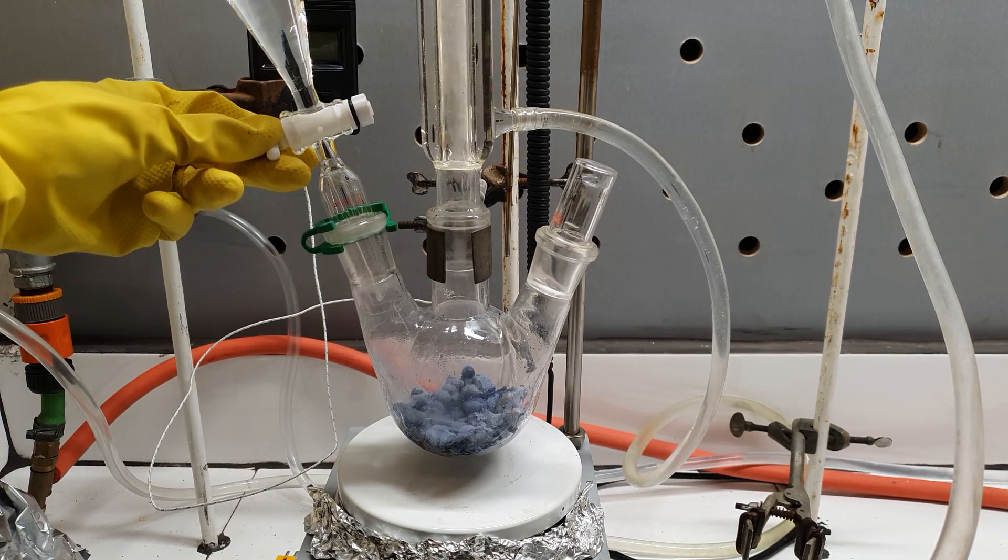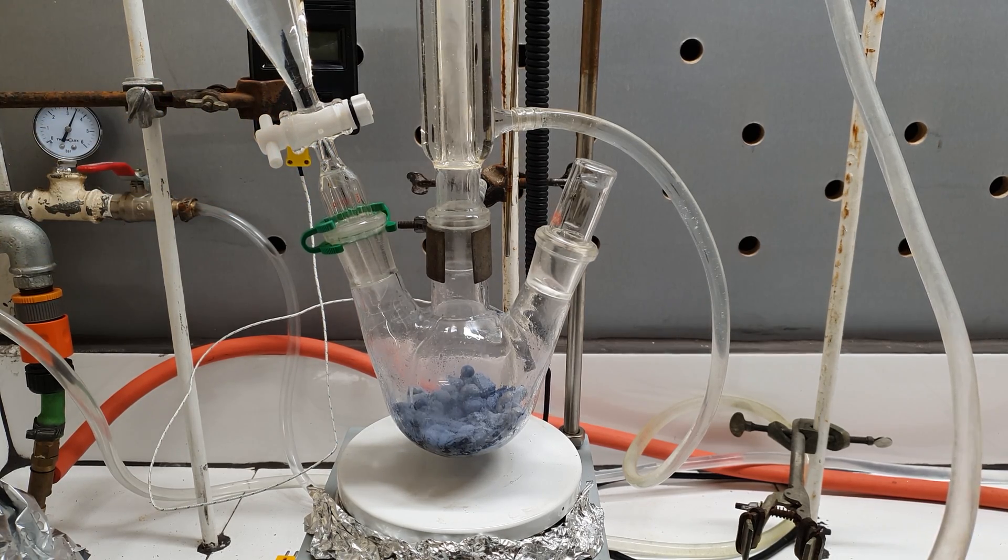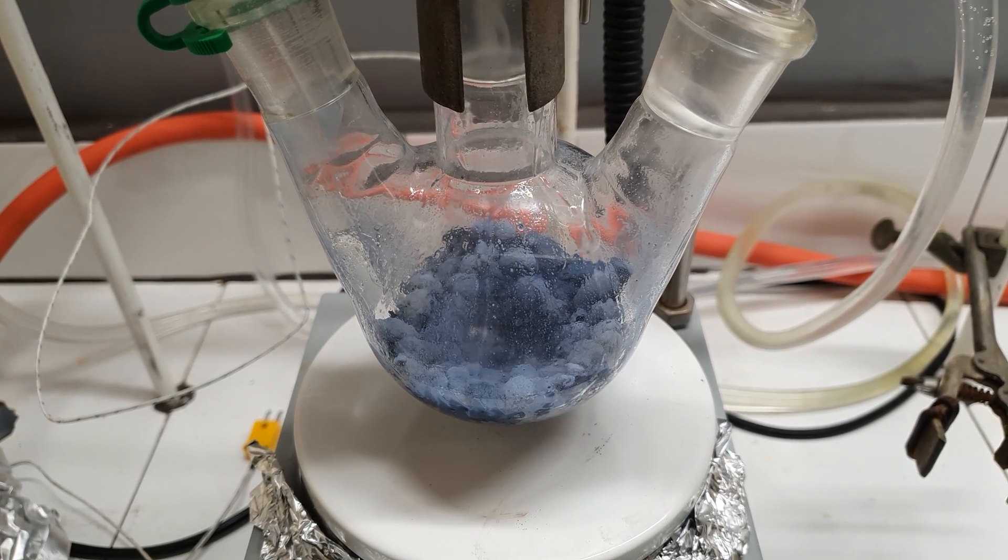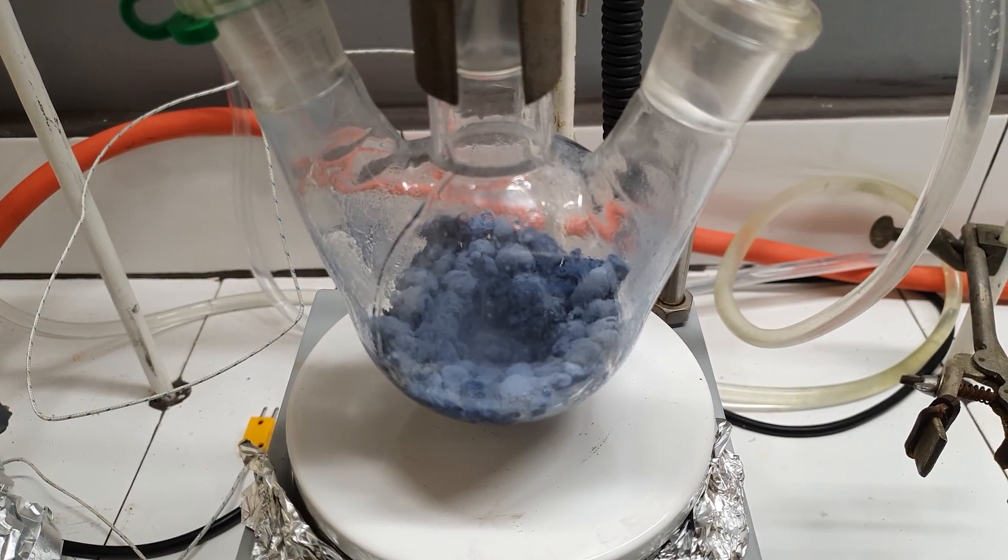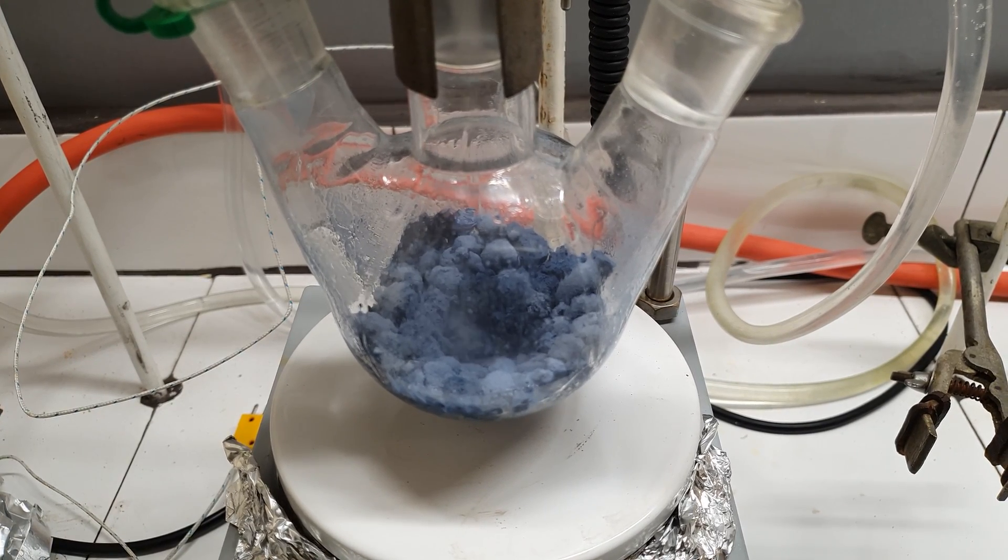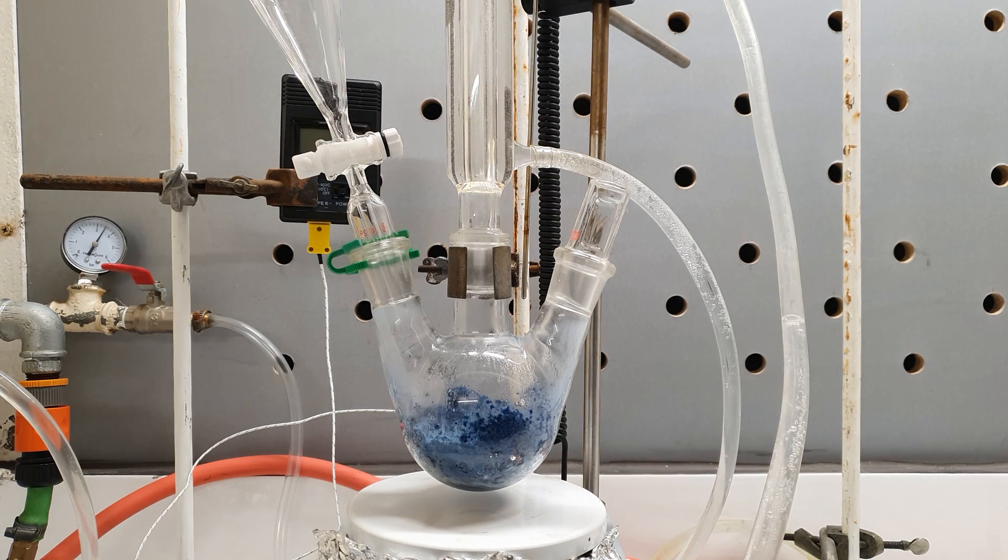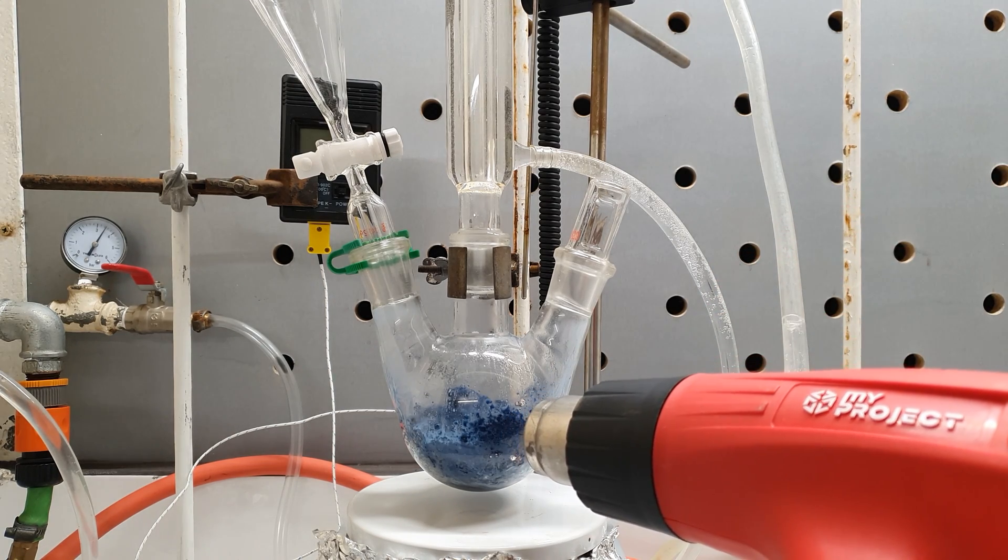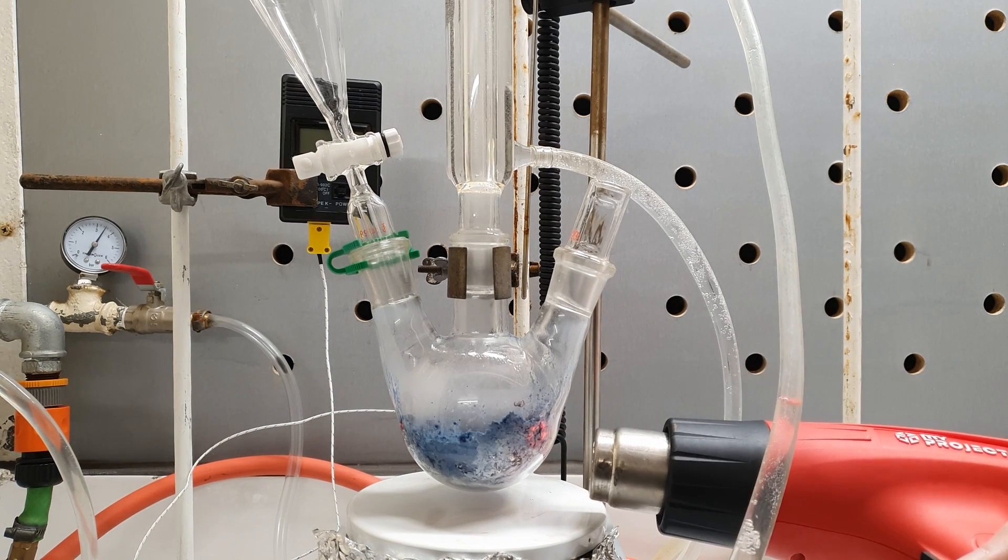Once the reaction started, I kept adding more of the bromobutane to sustain a vigorous reflux. The addition was finished rather quickly and soon the reaction died down. To react any leftover traces of the bromobutane, I heated the flask again with my heat gun.